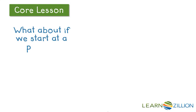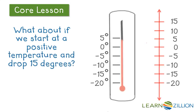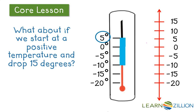What about if we start at a positive temperature and drop 15 degrees? This time we're going to start at 5. We're going to go down 5, 10, 15 degrees, and we would land at negative 10 degrees. And we could do the same thing on a vertical number line.